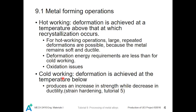For hot working operations, large repeated deformations can be achieved as the metal remains soft and ductile, and energy requirements are less than for cold working. However, there is an oxidation issue with hot working. For cold working, deformation is achieved below the recrystallization temperature. This produces an increase in strength of the metal piece but a decrease in ductility — this is basically strain hardening, which was introduced in Tutorial 5.